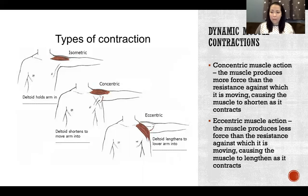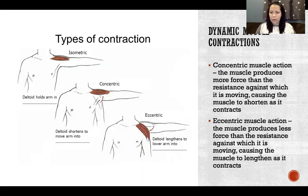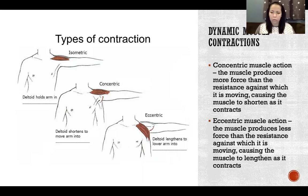If the muscle is lengthening during a dynamic contraction, then it's an eccentric muscle action or muscle contraction. In that case, the muscle is producing less force than the resistance against which it's moving, so the whole muscle is lengthening as it's contracting.